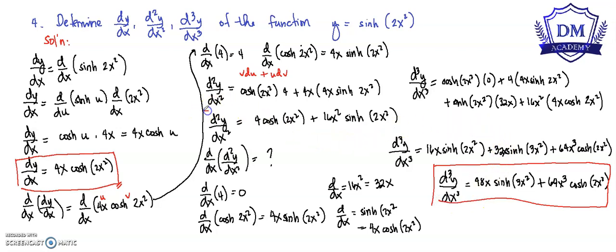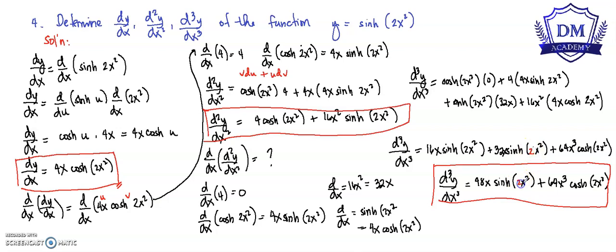Thank you for watching. Let's have some corrections — the argument in the hyperbolic functions should be 2x squared throughout. This must be 2x squared. Thank you.